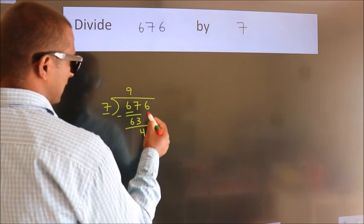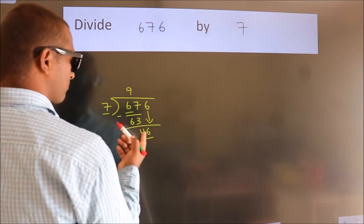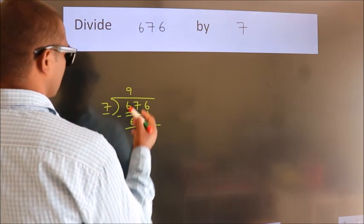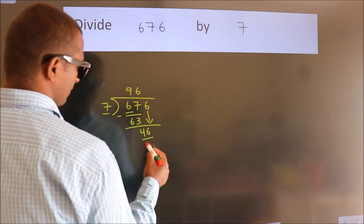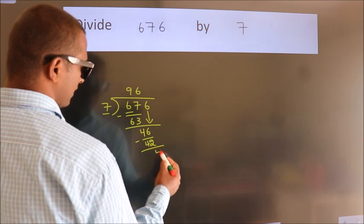After this, bring down the next number. So 6 down. So 46. A number close to 46 in the 7 table is 7 times 6 equals 42. Now we subtract. We get 4.